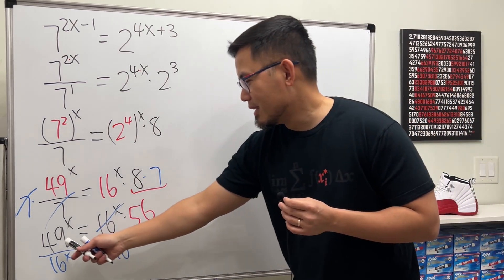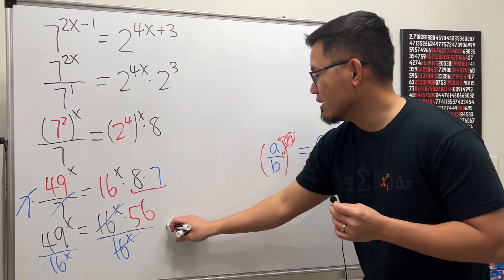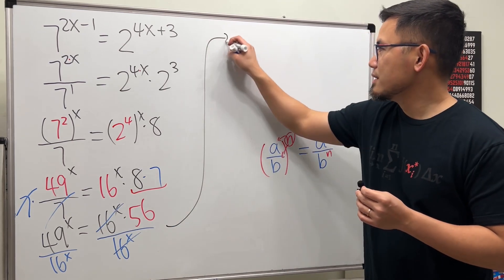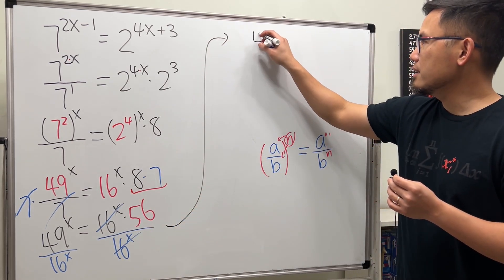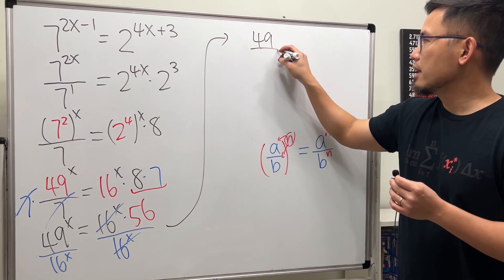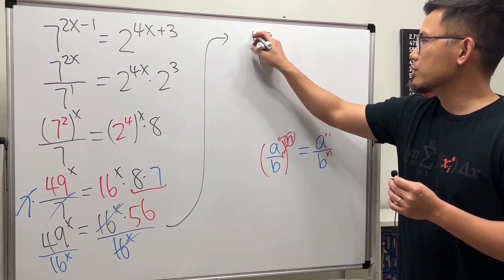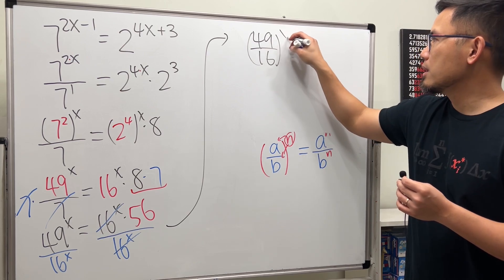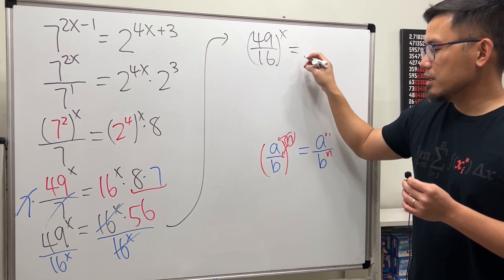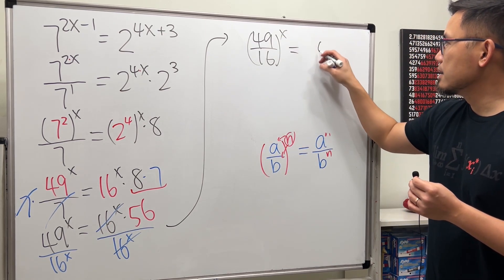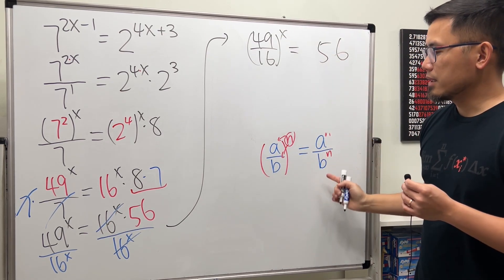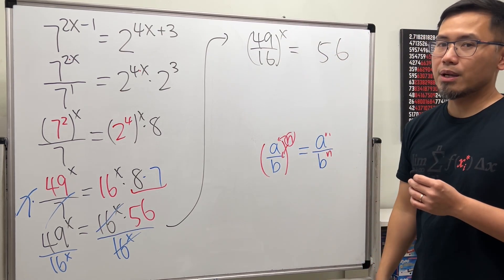This right here gives us 49 over 16 raised to the x power, and that is equal to 56. And again, apply this backwards.